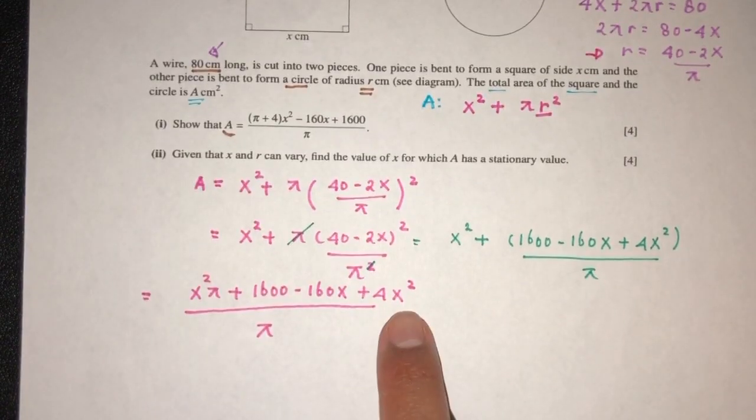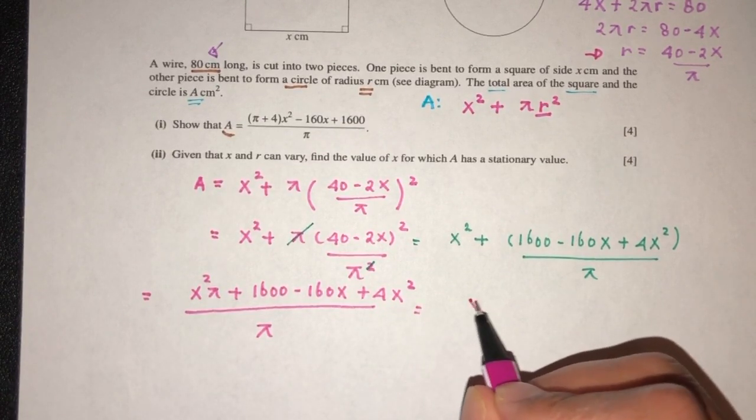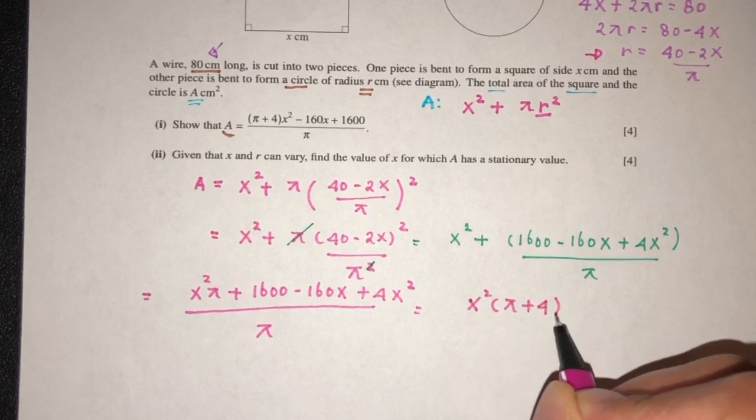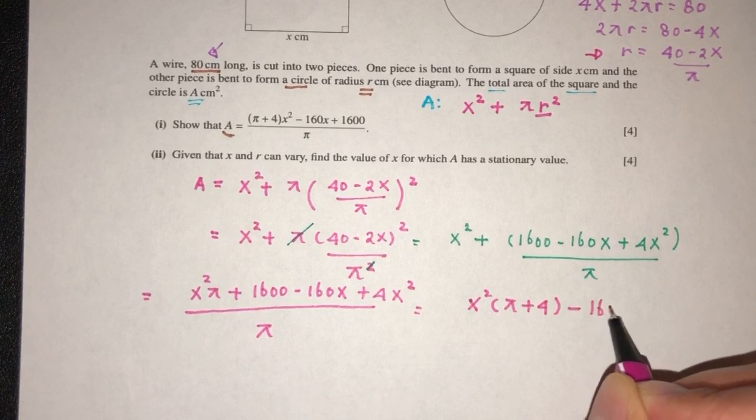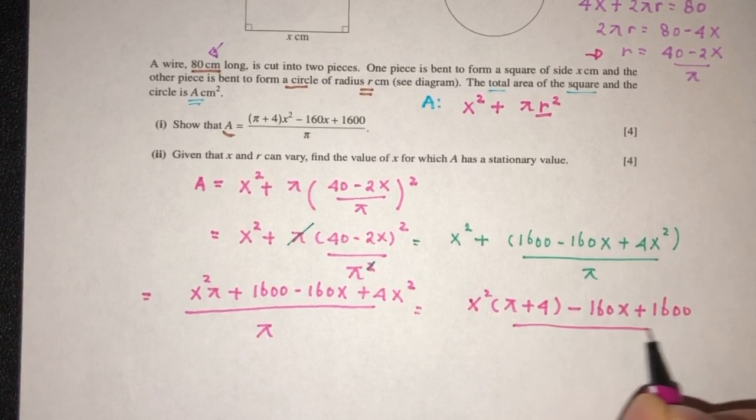Now we can see here we have x square and x square, we can combine them. That will become x square and x square. Factorize π plus 4, factorize π plus 4. And we have minus 160x plus 1600 over the value of π.